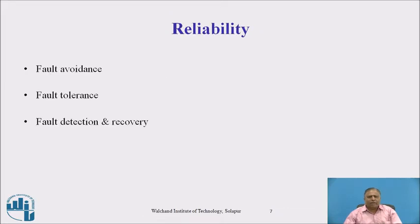The next issue is reliability. Fault avoidance, fault tolerance, and fault detection and recovery are parts of reliability. In fault avoidance, we design the components of the system to minimize fault occurrence, using high reliability hardware components. In designing a distributed operating system, we must use high quality components for fault avoidance.